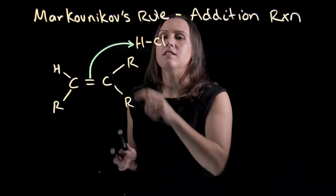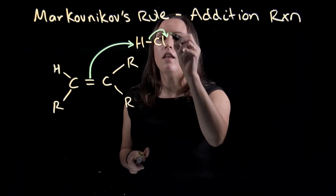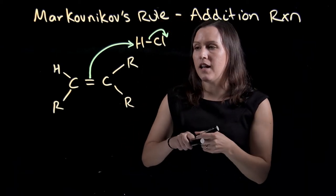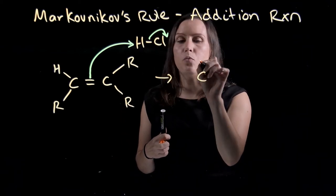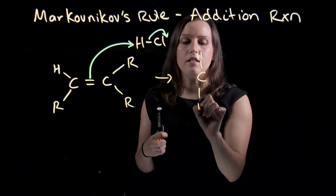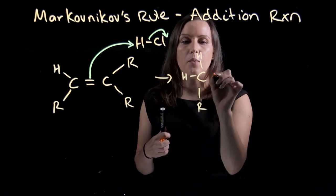In this process, this bond will need to break and the chlorine will become Cl-. When this happens, our hydrogen will go to one side and on the other side we will get a carbocation intermediate.